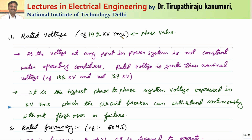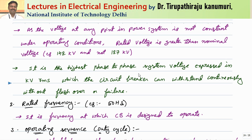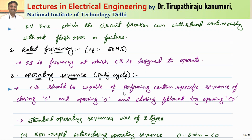The voltage at any point in the power system is not constant under operating conditions, because continuous load fluctuations cause the voltage to vary above or below the nominal value. That is why the rated voltage is always greater than the nominal voltage — for example, 142 kV for a 220 kV (127 kV per phase) line. It is the highest phase-to-phase system voltage expressed in kV RMS which the circuit breaker can withstand continuously without flashover or failure.